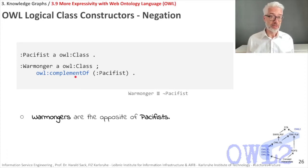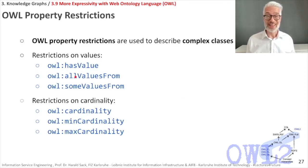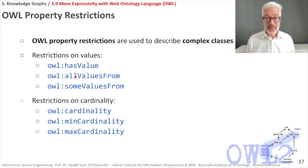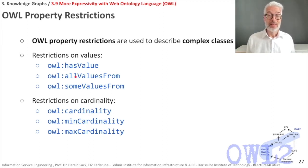We've now seen examples for all three connectors — conjunction, union, and negation. However, there are more ways to create complex classes in OWL. Now we come to the so-called property restrictions, where new classes are created by restricting the range on which a property can be applied — either restricting values of that range or restricting the cardinality.